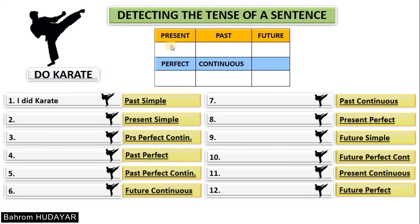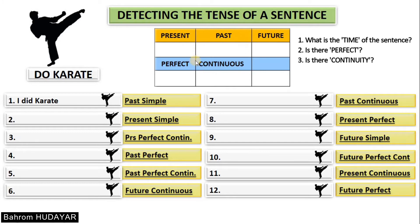Let's review the three questions again. There were three questions you have to ask yourself. The first question is: what is the time of the sentence? You have to determine the time of your sentences — is it present, past, or future?